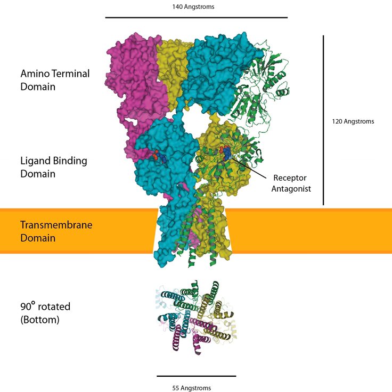Negative allosteric modulators include: barbiturates (e.g., pentobarbital, sodium thiopental — non-selective); ethanol (non-selective); inhalational anesthetics (e.g., cyclopropane, desflurane, halothane, isoflurane, sevoflurane — non-selective); GYKI-52466; arampanel; perampanel; and talampanel.